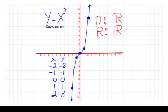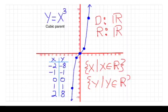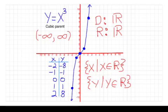In set notation, the domain is: the set of all x's such that x is an element of the real numbers. The range is: the set of all y's such that y is an element of the real numbers. In interval notation, both x and y go from negative infinity to positive infinity — written (-∞, +∞) for both domain and range.